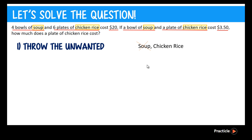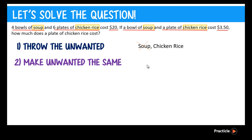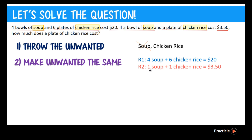Now that we know what we want to get rid of, the next step is to make the number of unwanted items the same. We have two relationships from the question. In order to make the unwanted item disappear, we ask: what is the common multiple between 4 and 1? It's 4. So let's transform the second relationship by multiplying everything by 4. 1 soup × 4 = 4 soups; 1 chicken rice × 4 = 4 chicken rice; and $3.50 × 4 = $14. So the new relationship is: 4 soup + 4 chicken rice = $14.